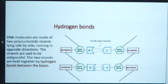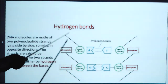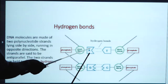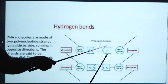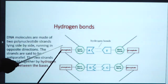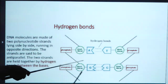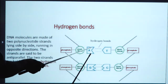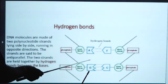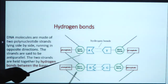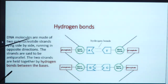DNA molecules are made up of two polynucleotide strands lying side by side and running in opposite directions. The strands are said to be antiparallel. The two strands are held together by hydrogen bonds between the bases. Adenine and thymine are bonded by hydrogen bonds, as are the phosphate and nitrogenous base components. Adenine and guanine, as well as guanine and cytosine, are also connected by hydrogen bonds.